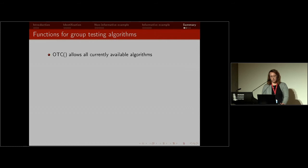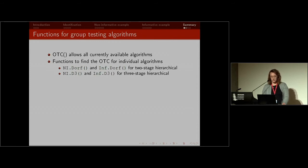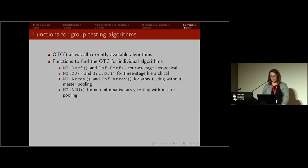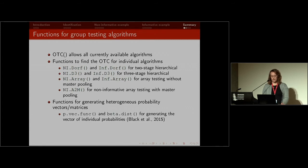The functions added to the bin group package include the OTC function as the primary function, and there are also functions for each individual algorithm. The OTC function allows you to choose your algorithm, or you can use the individual functions if you prefer. There are functions for two stage hierarchical, three stage hierarchical, array testing without master pooling, and array testing with master pooling. There is not an algorithm for informative array testing with master pooling because it hasn't been proposed in the literature yet. There are also functions for generating the probability vectors and matrices.